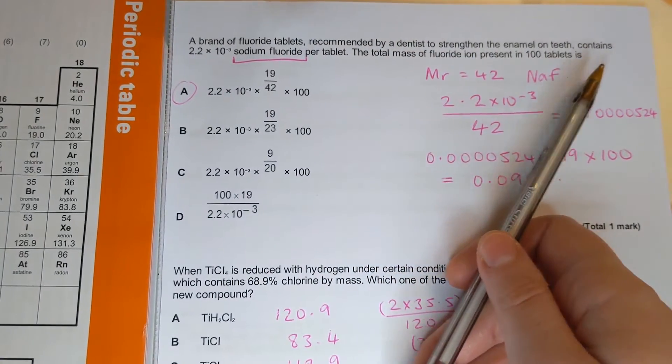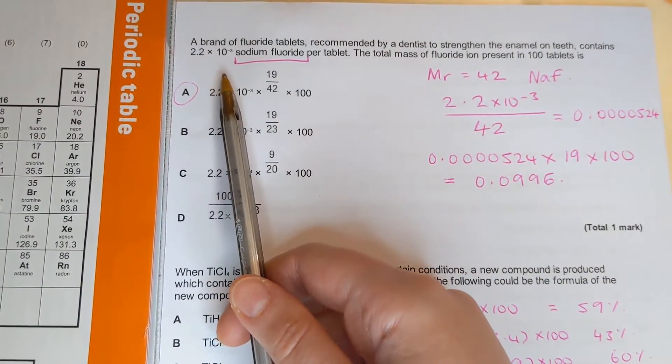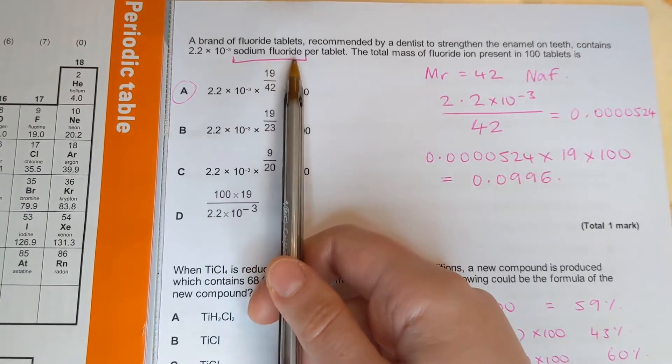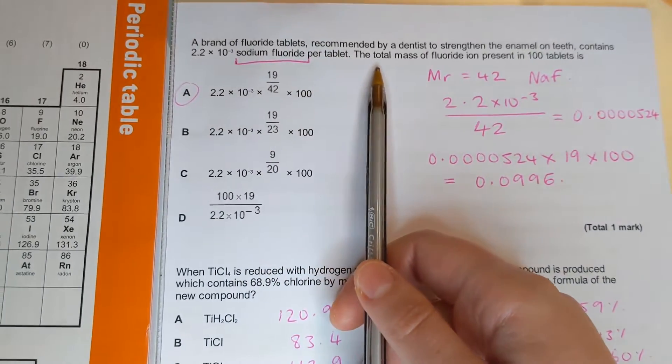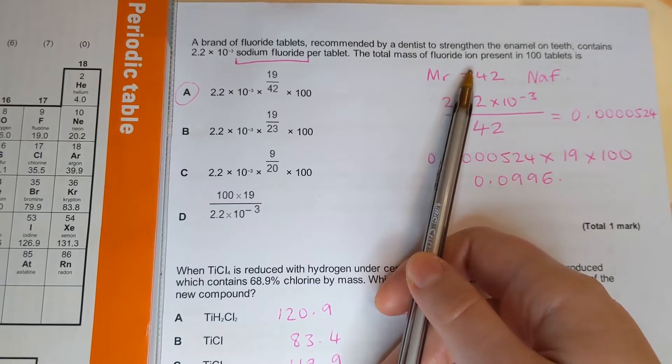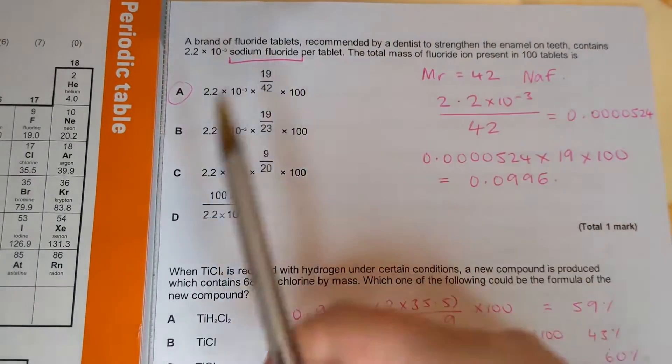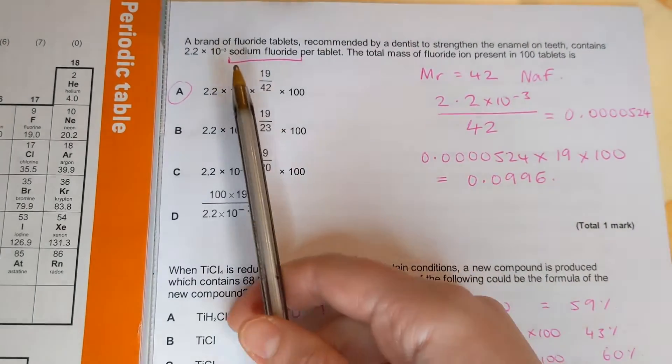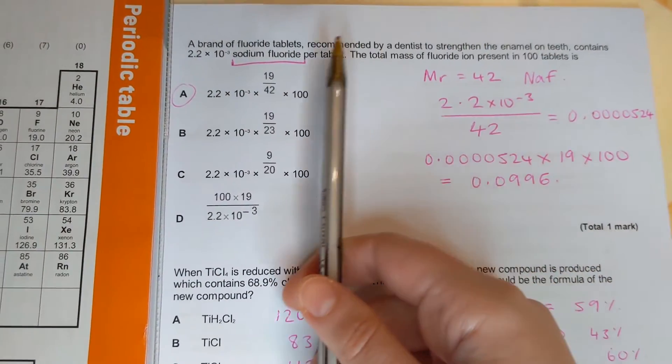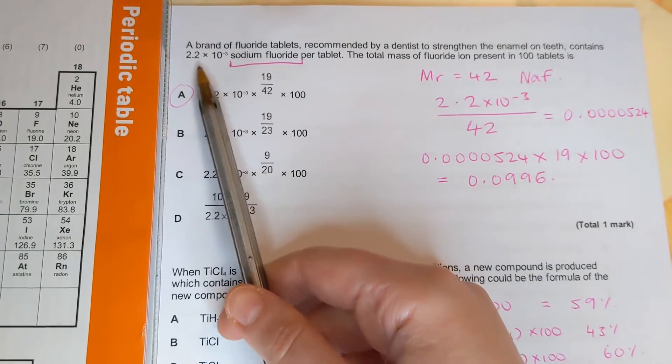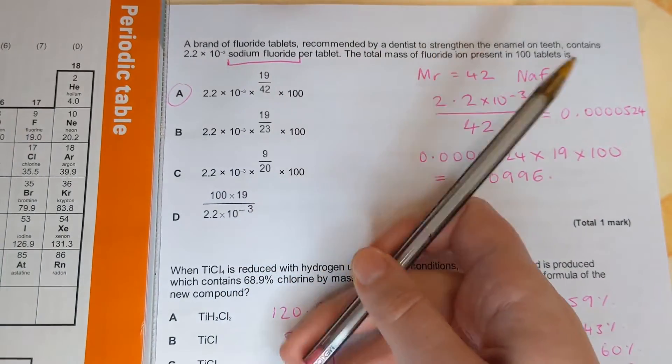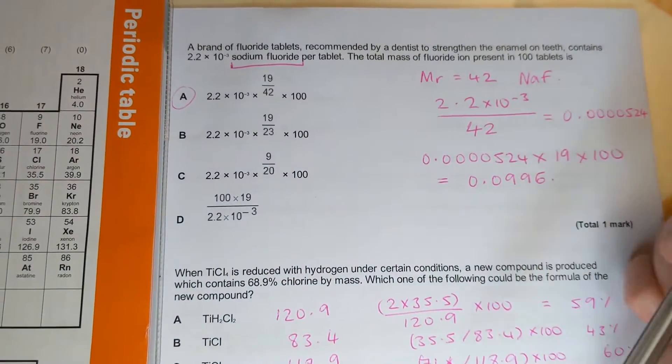...to strengthen the enamel on teeth contains 2.2 times 10 to the minus 3 sodium fluoride per tablet. The total mass of fluoride ions present in a hundred tablets is. Now the first thing we should do with something like this is maybe read the question again carefully, perhaps highlight or underline any numbers or key information.